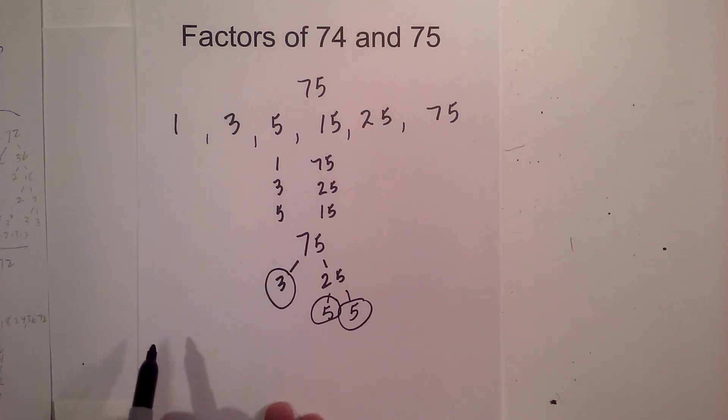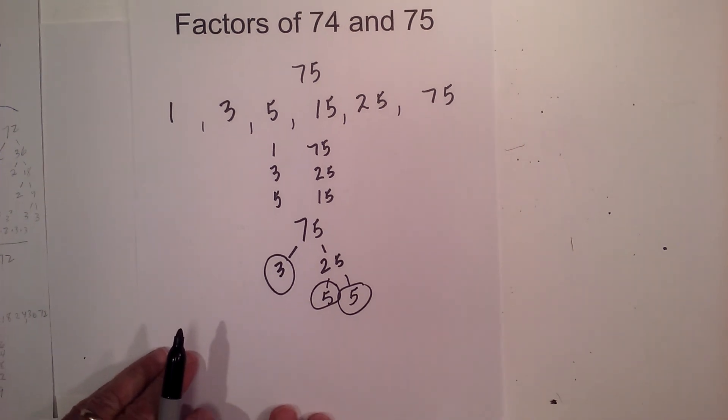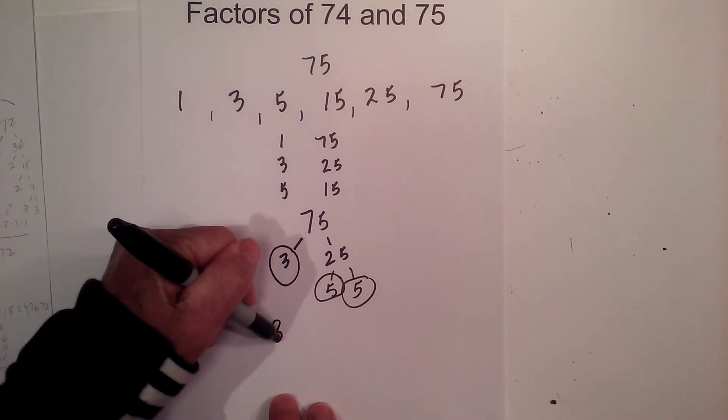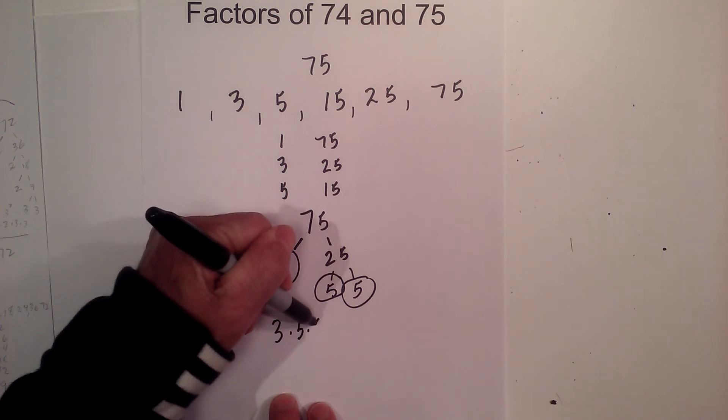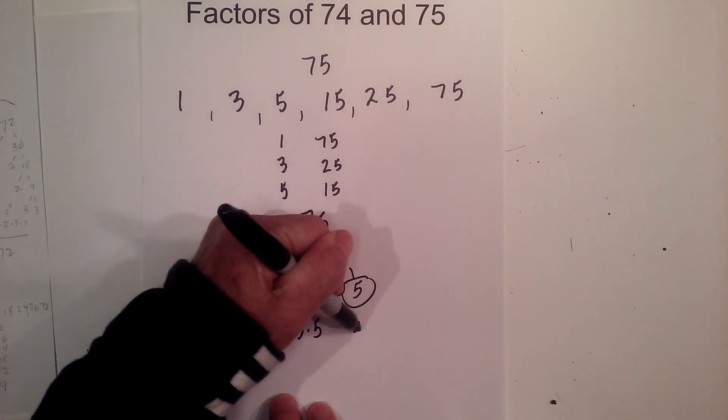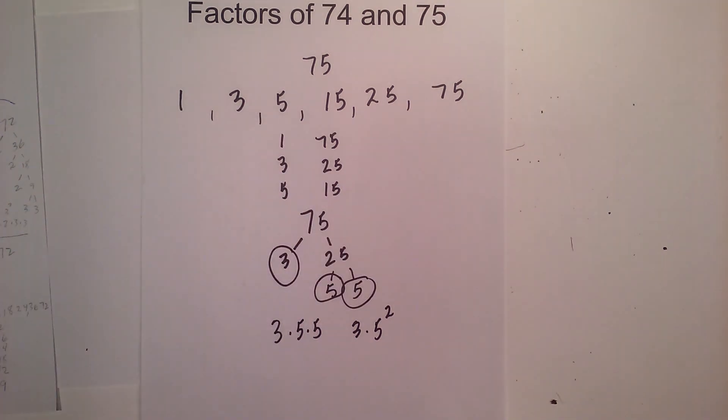So the prime factors of 75 are 3 times 5 times 5, or 3 times 5 squared.